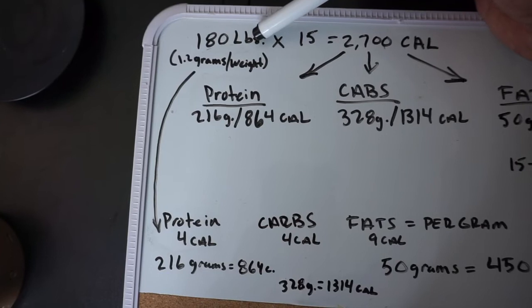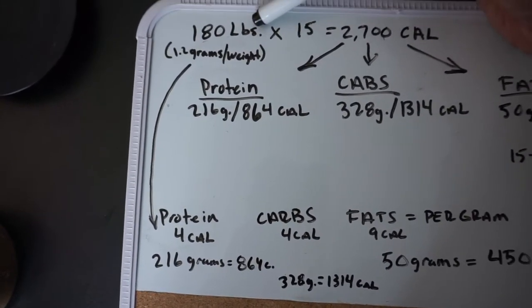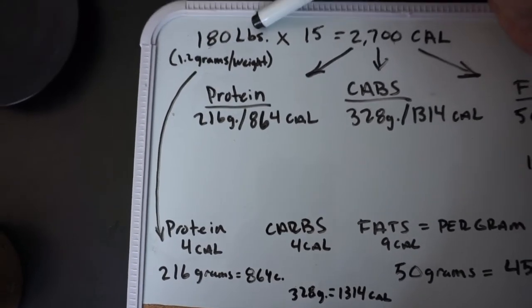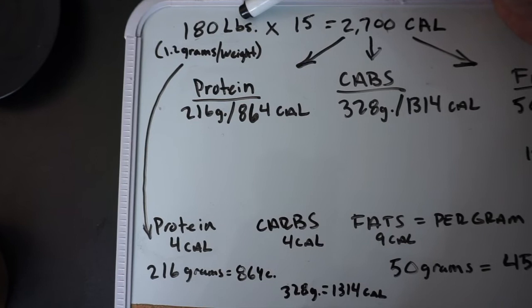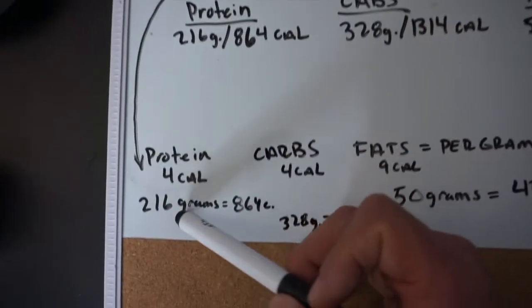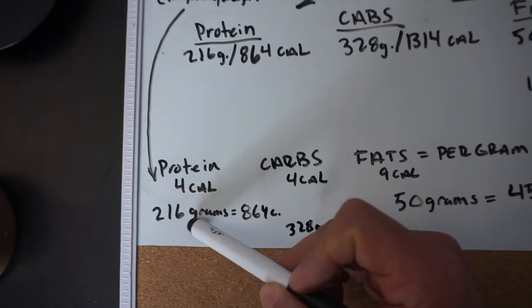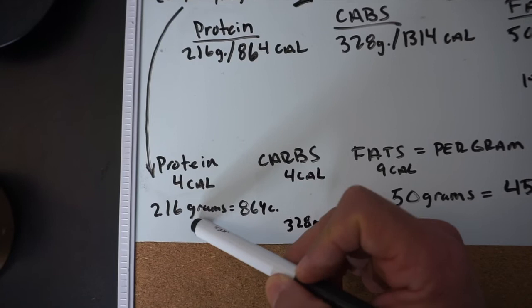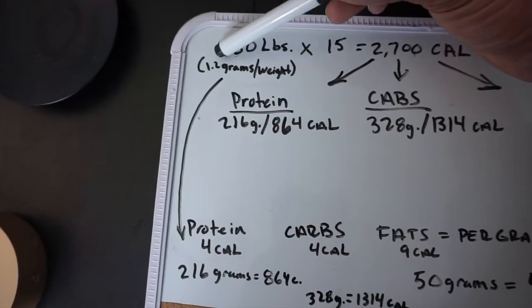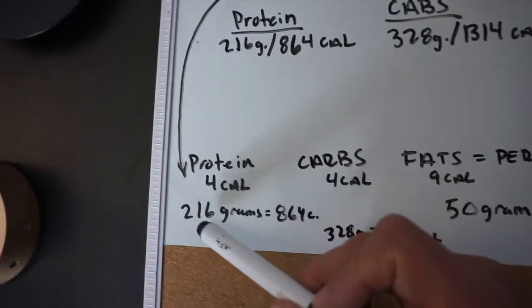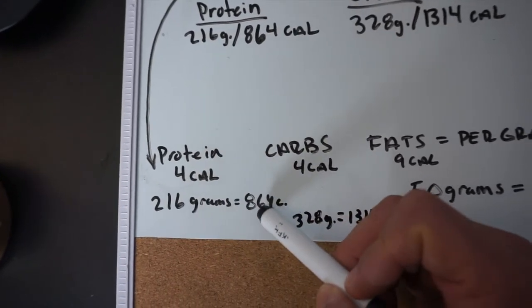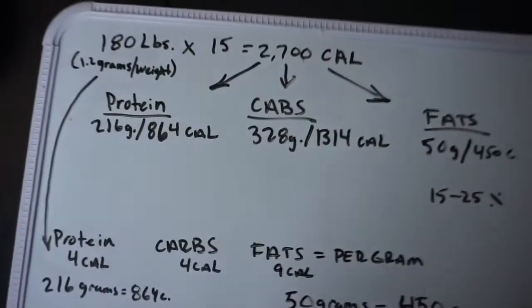I personally like to maintain at least one gram of protein per pound of body weight. Since I'm a male trying to build lean mass, I go a little higher — up to 1.2 grams per pound of body weight. So I do 1.2 grams times 180 pounds, which gives me 216 grams of protein. Since there are 4 calories per gram, that comes out to 864 calories from protein.